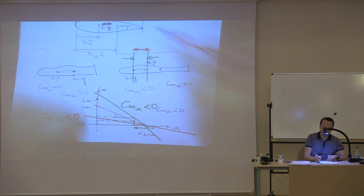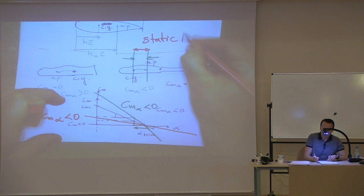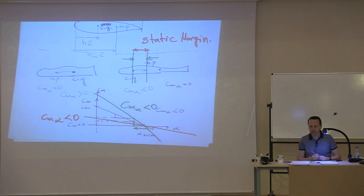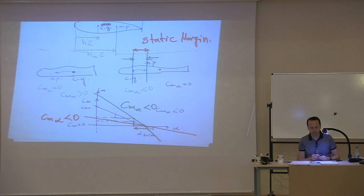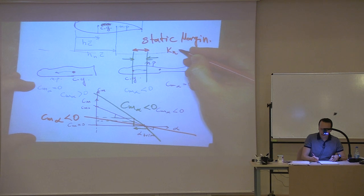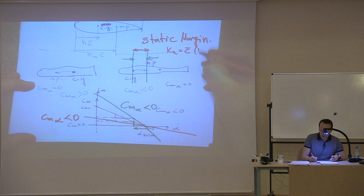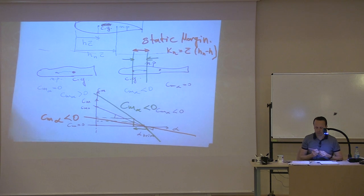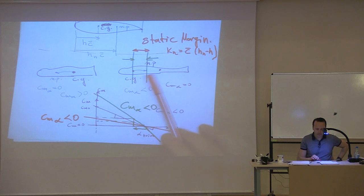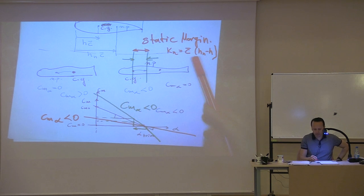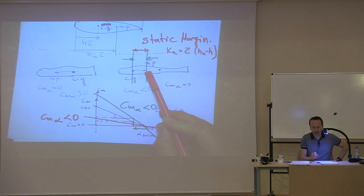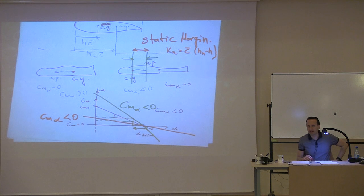This distance we call the static margin. It is the distance between the CG and the neutral point. We define it as: KN equals C_bar times (HN minus H), where HN is the position of the neutral point and C_bar is the reference chord length. Since the neutral point is at the back, a positive static margin indicates a stable airplane.